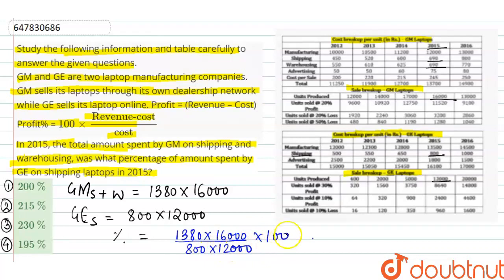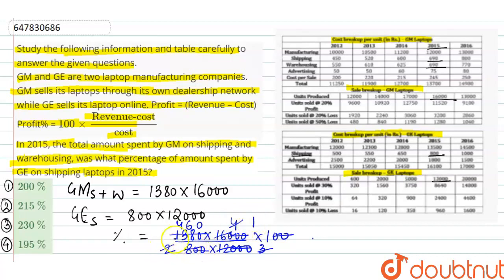Now, we calculate the percentage: (1380 × 16,000) / (800 × 12,000) × 100. The 30s cancel, 4 goes into 16 four times and into 12 three times. After cancelling the 20s, we solve with 3: 3×4=12, 3×6=18. Final simplification gives 4×60 = 2×30 = 230. So the answer is 230%, which is the third option — the right answer. Thank you.